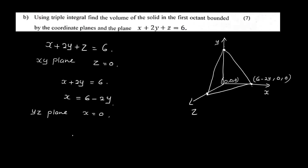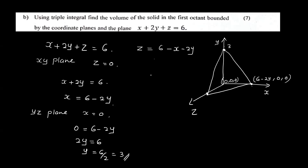Setting x equal to 0 in the equation gives 0 equal to 6 minus 2y, so 2y equals 6, y equals 6 divided by 2, which equals 3. The z equation is equal to 6 minus 2y. So this gives the intercept point (0, 3, 0).